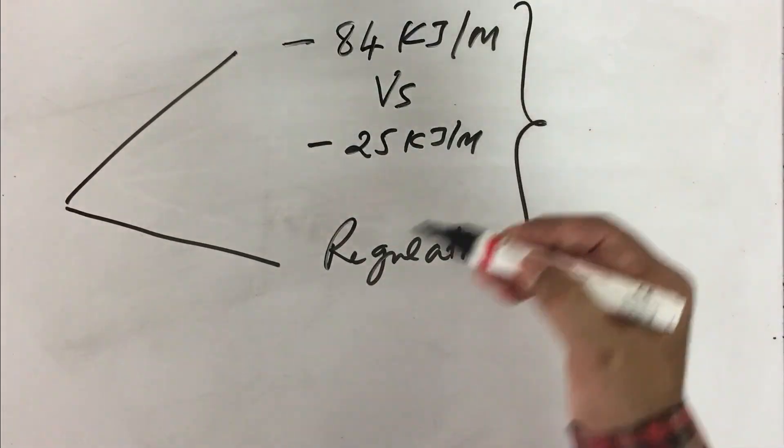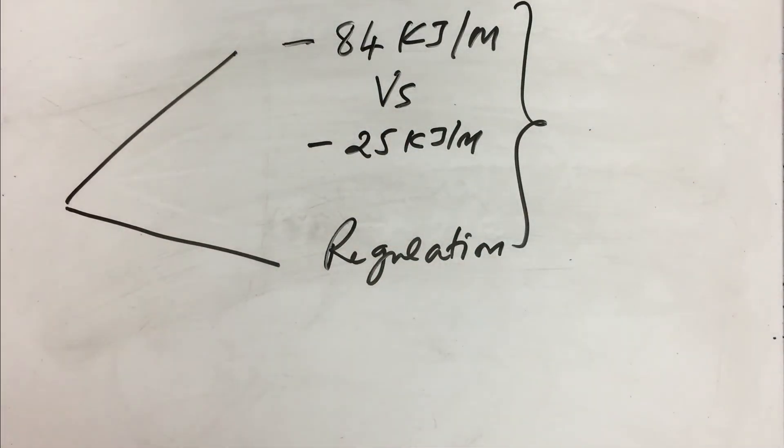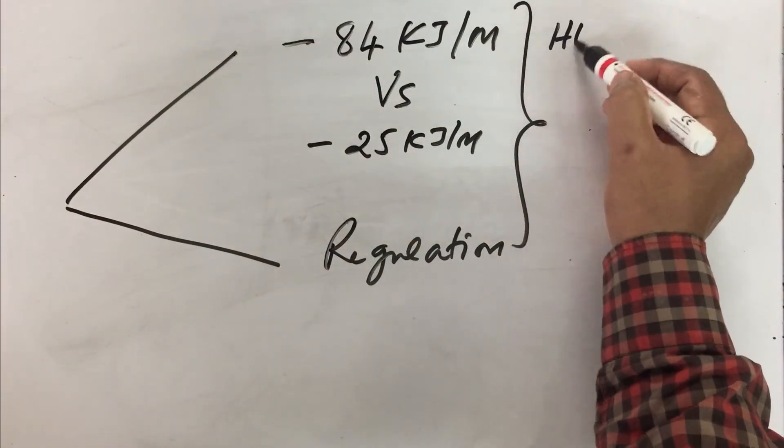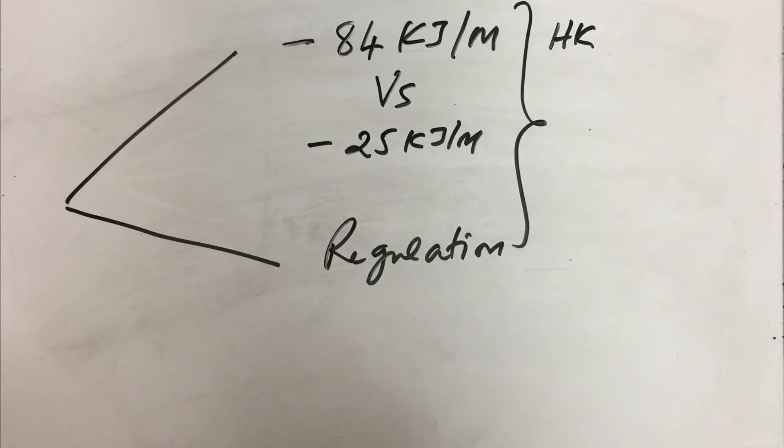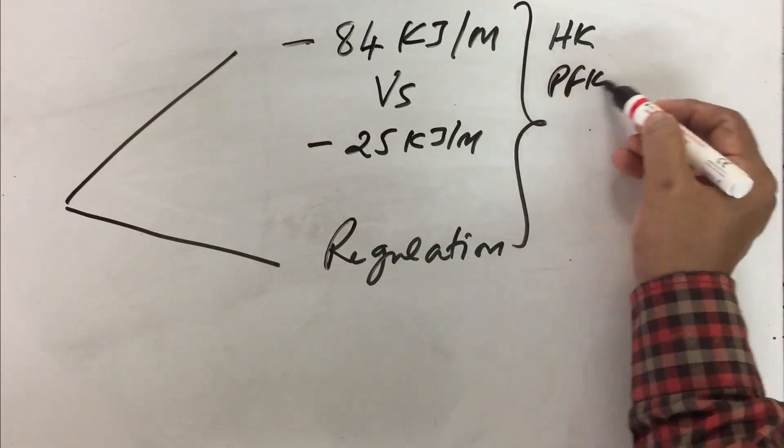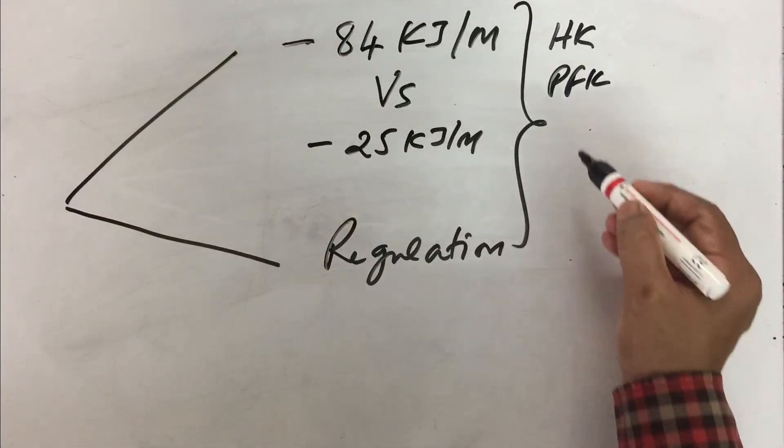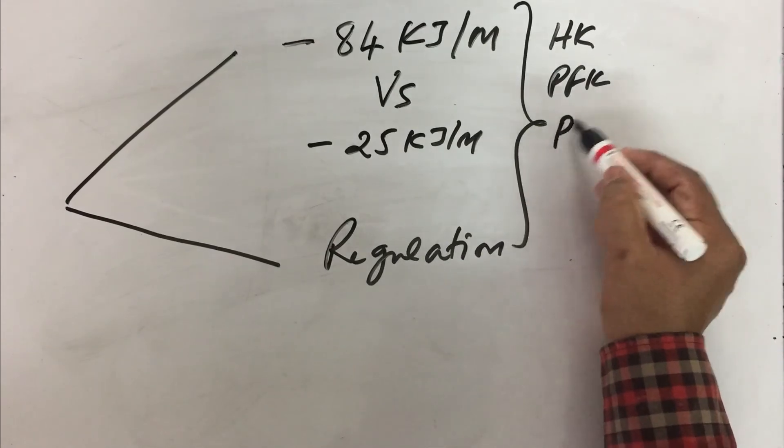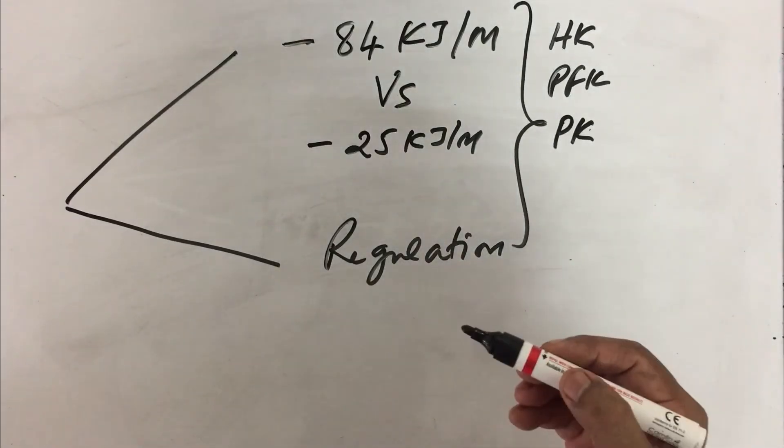That is mainly because of three steps of glycolysis. One is the hexokinase mediated step. The second is the PFK mediated step. And the third is the pyruvate kinase mediated step.